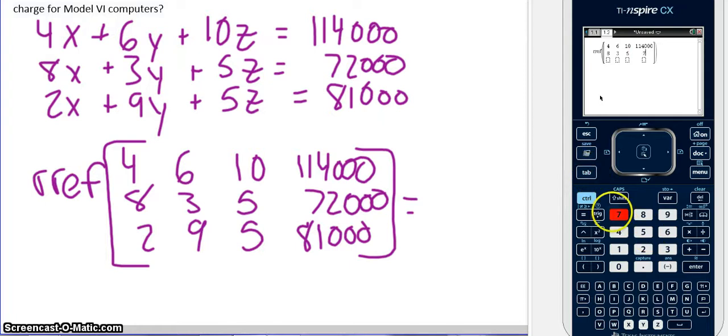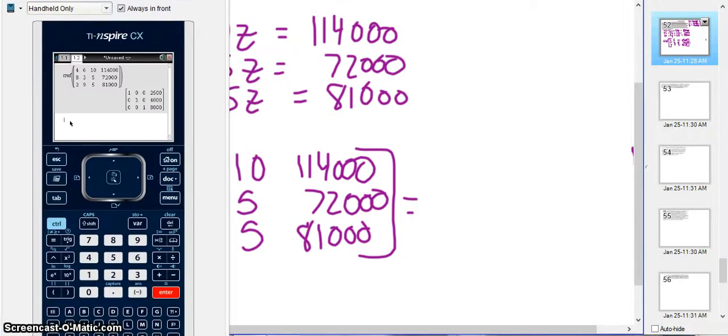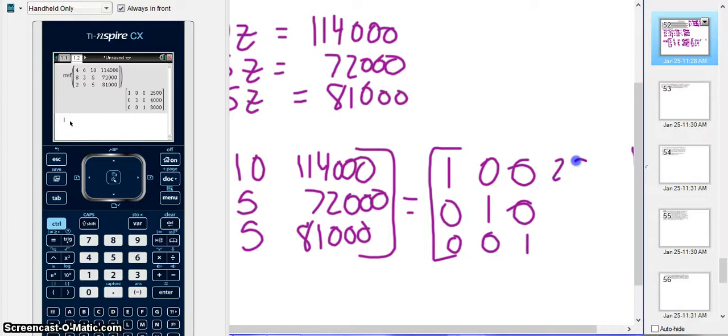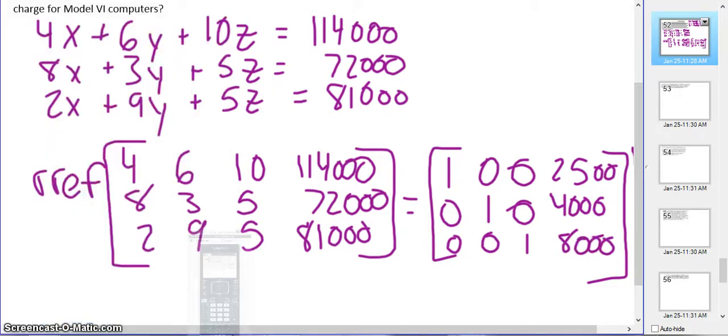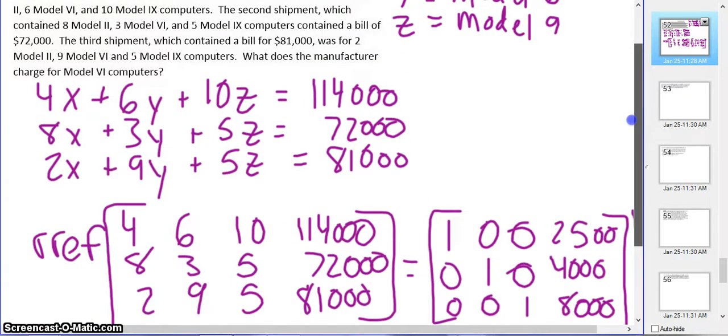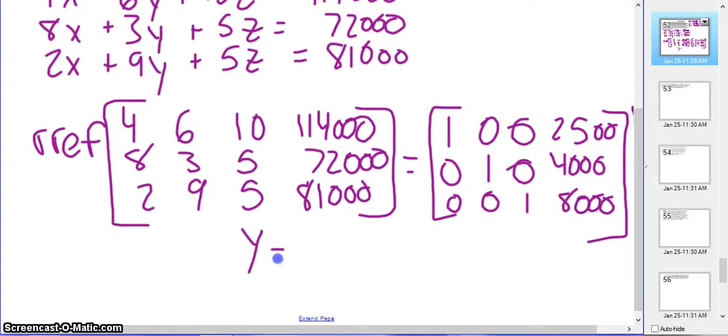Remember, when we do RREF, you should have basically the identity matrix, and then the last column should have numbers which are going to be our answers. Anything you type in the calculator goes on your paper. If you don't get the identity matrix, that means somewhere you made a mistake. So the 1X is $2,500, the 1Y is $4,000, and the 1Z is $8,000. We're going to write down what we got, and then we actually have to answer the question. Model 6 was Y, so Y is they charge $4,000.